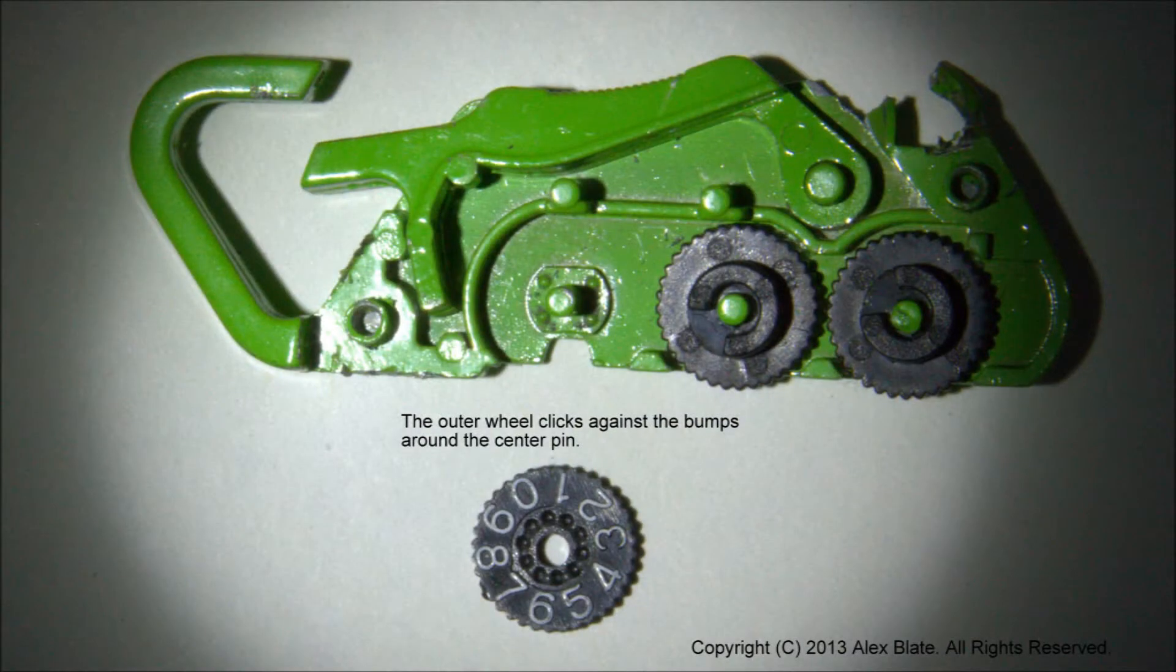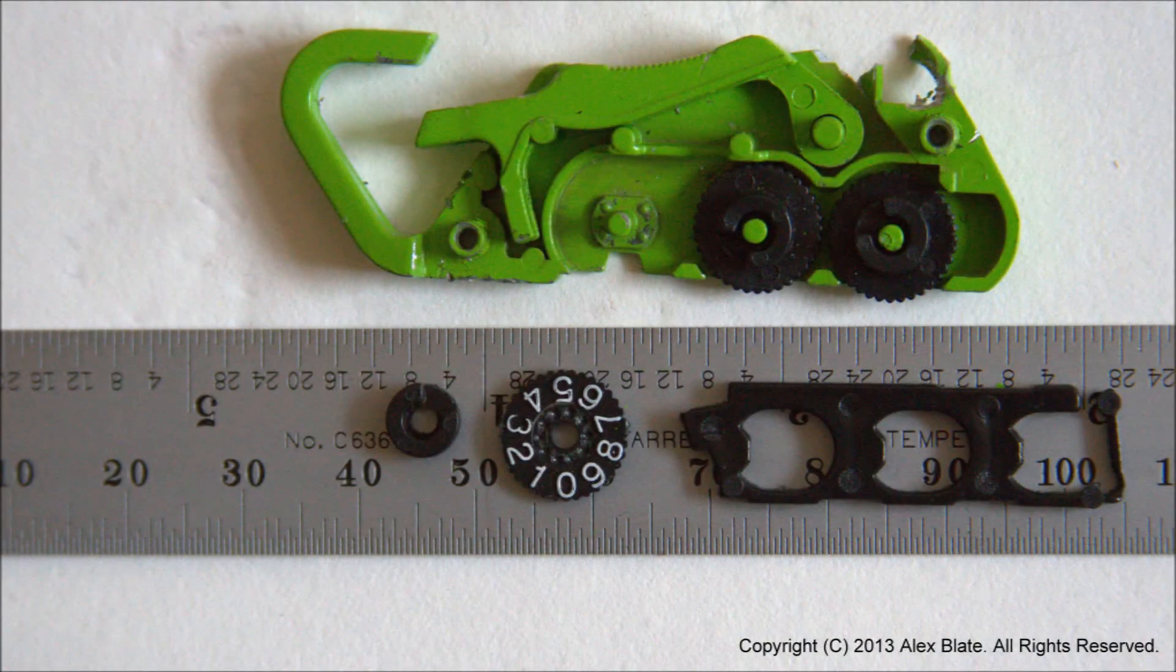Here you can see the whole assembly. And I flip one of the outer wheels over, you can see the little holes in it which interact with the little bumps around the pin. And that's what causes it to click as you rotate it. And just a quick shot of all the parts with a scale so you can see how big they are.